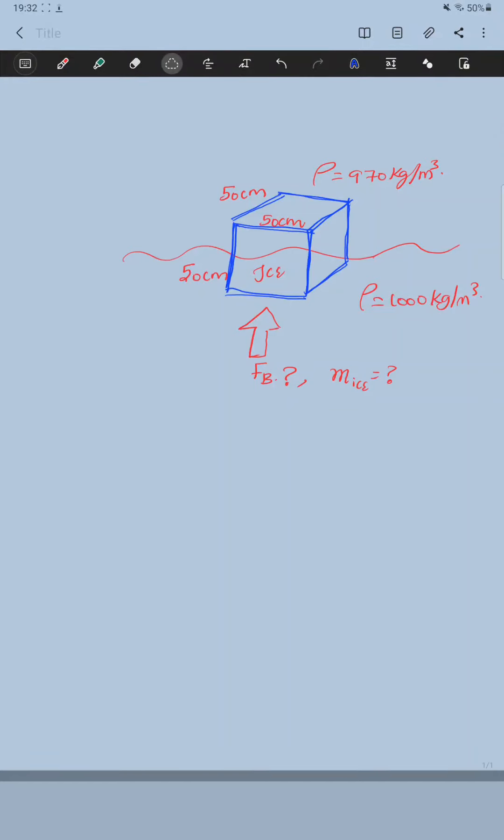My dear people, let us look at this particular problem which is a variation of the first one that we saw. So here we have a block of ice that is 50 centimeters on all sides, a cube of ice that is 50 centimeters. We have been given the density as well - density of the ice is given to be 970 kilograms per meter cubed, and it is floating in fresh water.